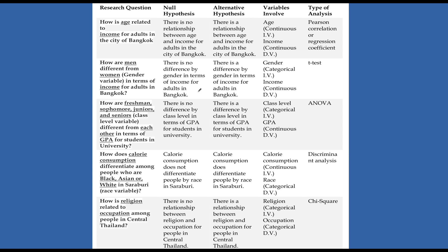Here I have the same questions, but now I've added the null hypothesis and the alternative hypothesis. For age and income, the null is: there is no relationship. The alternative is: there is a relationship. I repeat this process all the way down. Some teachers, advisors, or journals want hypotheses, some want research questions, some want objectives — it really depends on who you're writing for. There is no single way to explain your research. What is important is that you know how your audience communicates and you write in a manner that is appropriate for that audience.